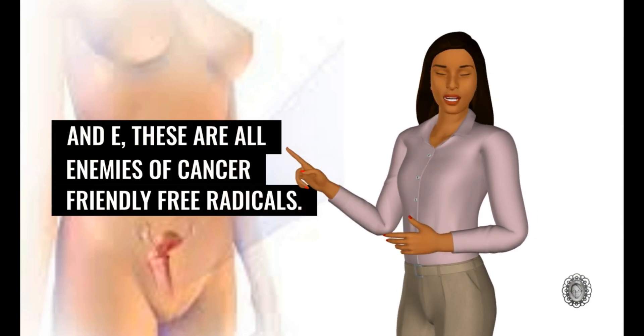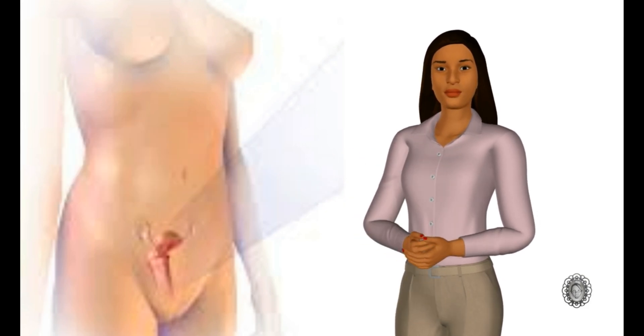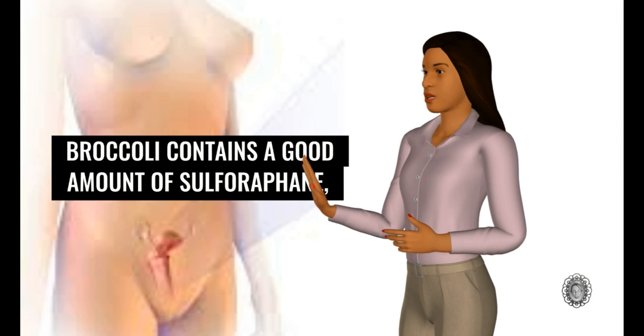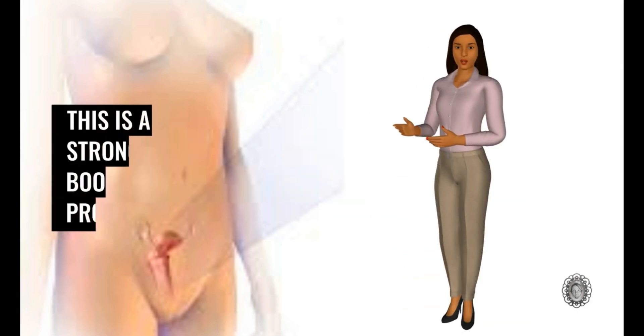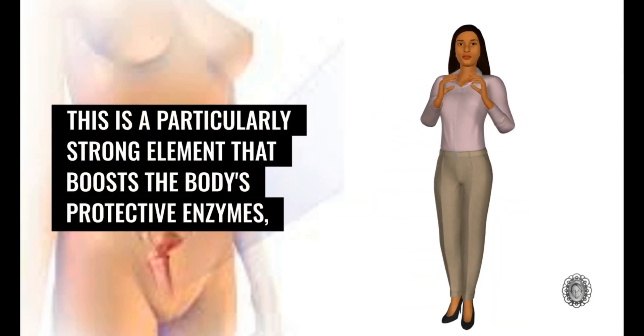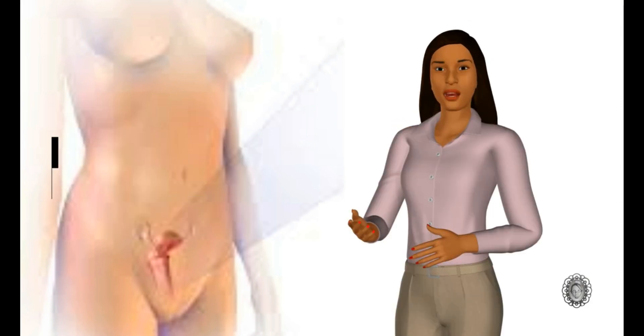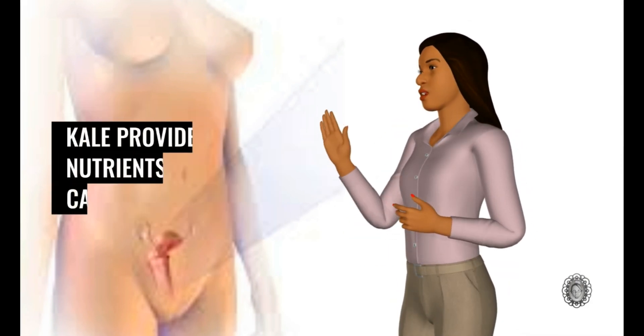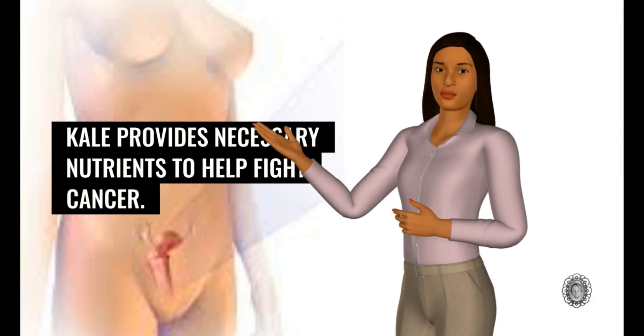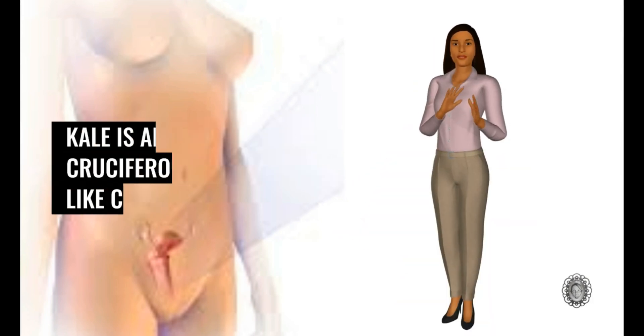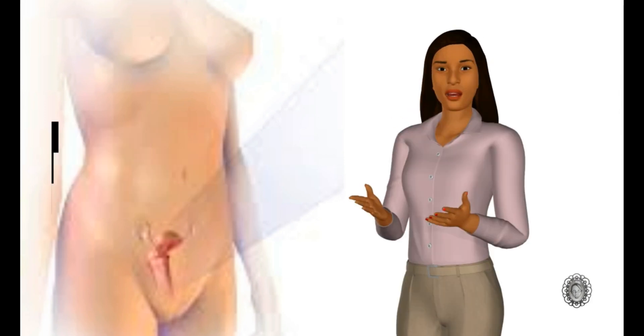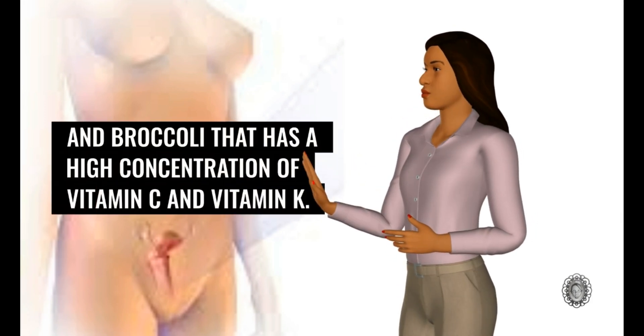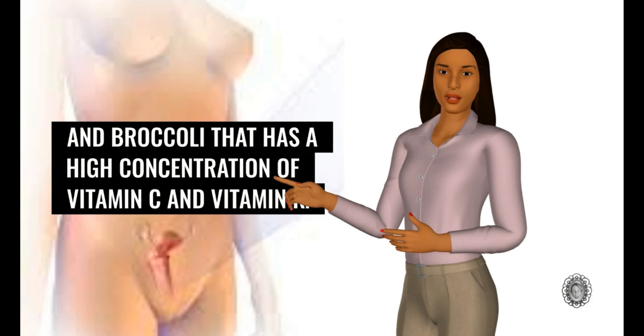Broccoli contains a good amount of sulforaphane. This is a particularly strong element that boosts the body's protective enzymes, and flushes out cancer-causing chemicals. Kale provides necessary nutrients to help fight cancer. Kale is another cruciferous vegetable like cauliflower and broccoli that has a high concentration of vitamin C and vitamin K.